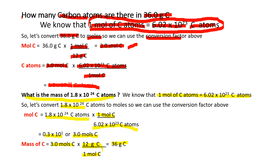And it makes sense. If 1 mole of carbon is 12 grams, therefore 3 moles of carbon is 36 grams.